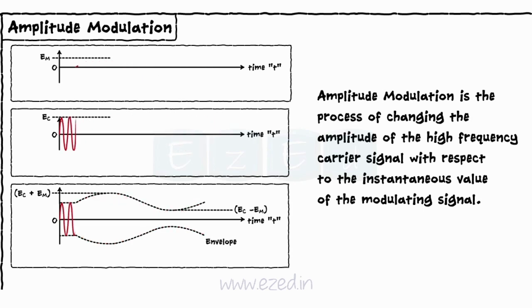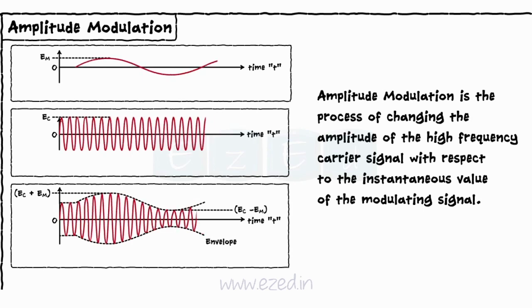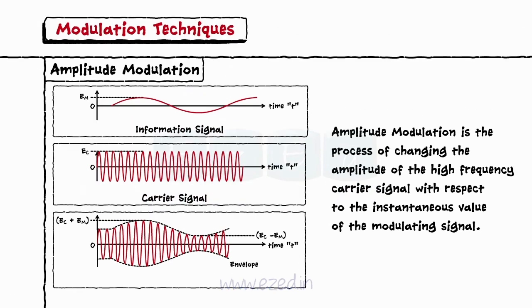Shown in the diagram below, first is the modulating signal, that is, the information signal. Second is the high-frequency carrier signal. And third signal is the modulated signal.